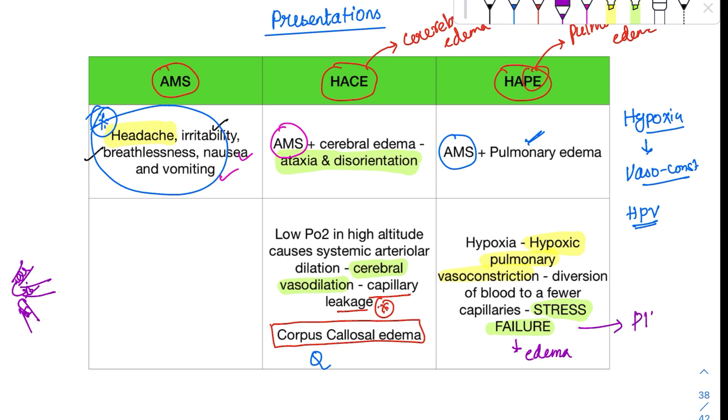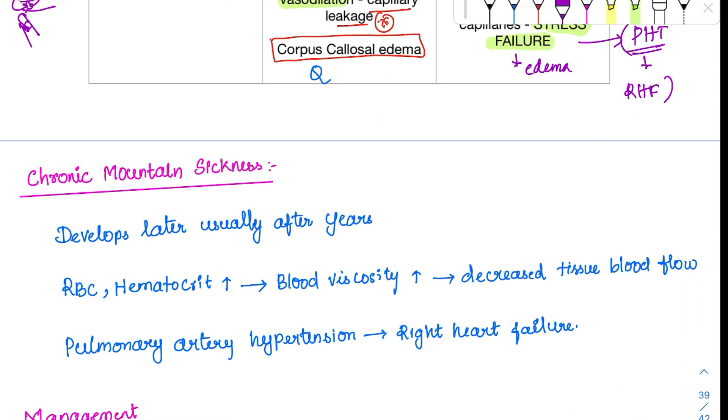Chronic mountain sickness develops after years. RBC count and hematocrit increase. Too much increase isn't good. Blood viscosity increases, leading to decreased tissue blood flow. Pulmonary artery hypertension causes right heart failure in the long run. These are features of chronic mountain sickness.